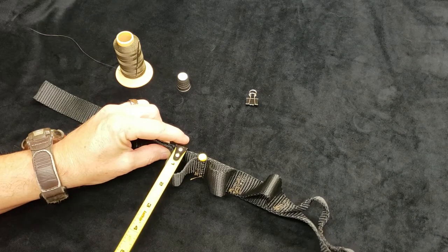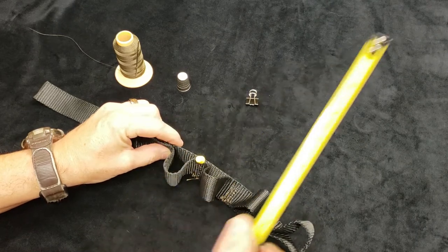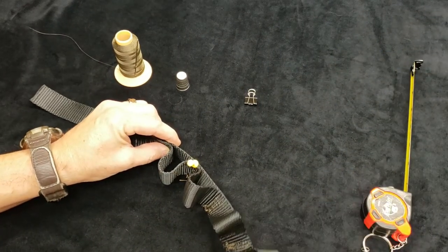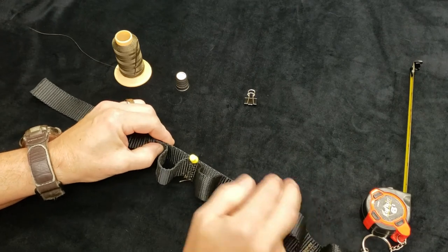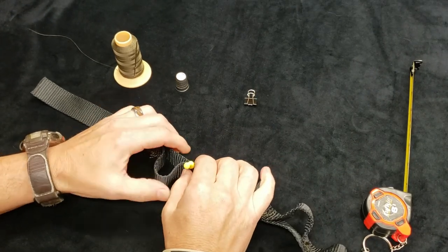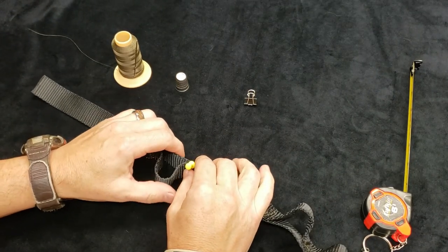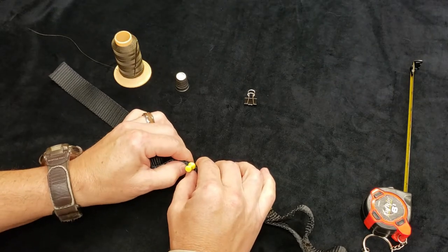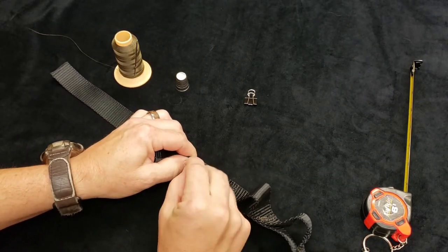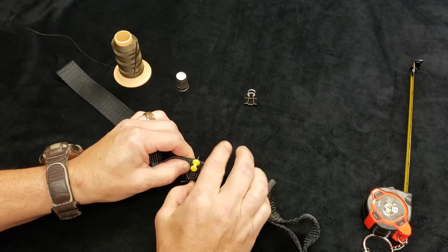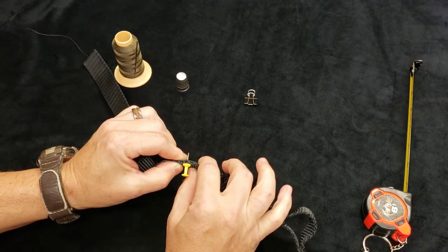And all of them you want to be an inch and a quarter, just to be uniform in your loop. And once you get that to an inch and a quarter, you pinch it, you hold it down, and you take your push pin and you push through both of them. And that holds it in place.